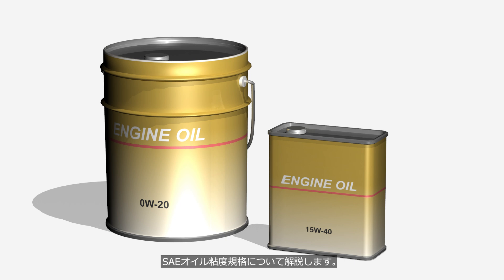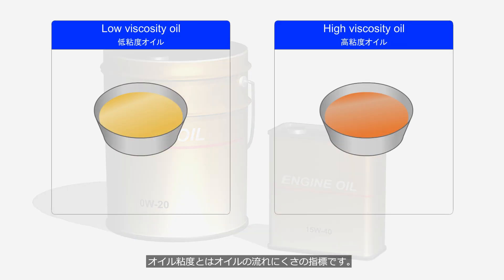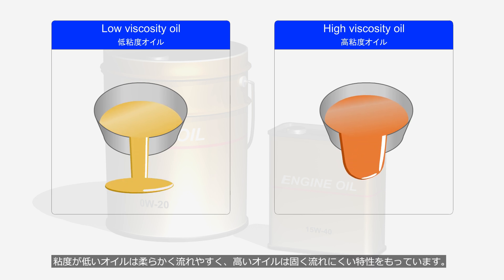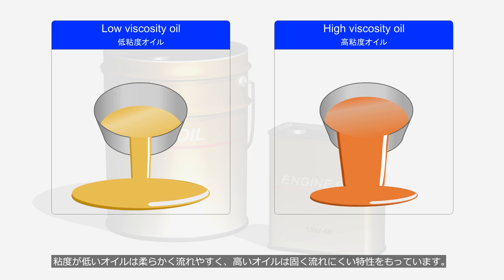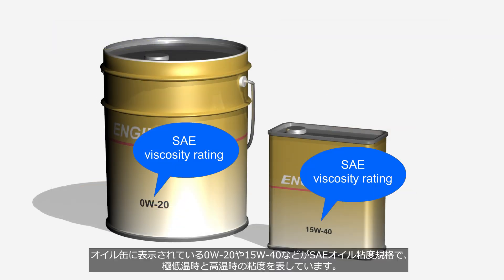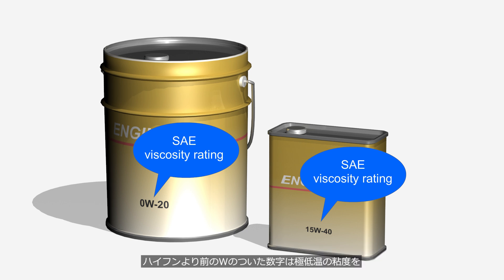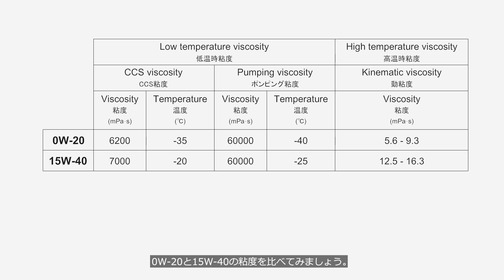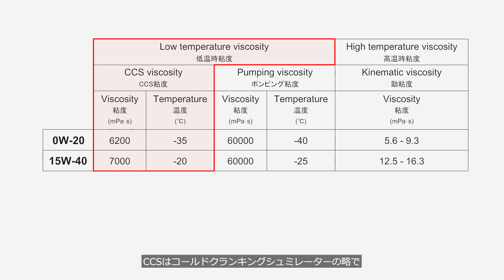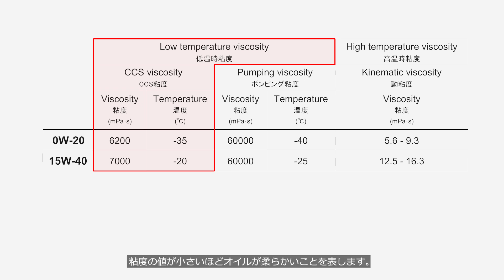We will learn about the SAE oil viscosity standards. Oil viscosity is a measure of the oil's resistance to flow — low viscosity oil is thinner and flows more easily, while high viscosity oil is thicker and flows less easily. Labels such as 0W20 and 15W40 on oil cans are SAE viscosity ratings indicating the oil's thickness at very low and high temperatures. The number with the W before the hyphen indicates viscosity at very low temperatures, while the number after the hyphen represents viscosity at 100 degrees Celsius. CCS stands for Cold Cranking Simulator and indicates how difficult it is for the engine to crank using the starter motor in cold conditions. A lower viscosity value indicates thinner oil; 0W20 at minus 35 degrees Celsius is thinner than 15W40 at minus 20 degrees Celsius.